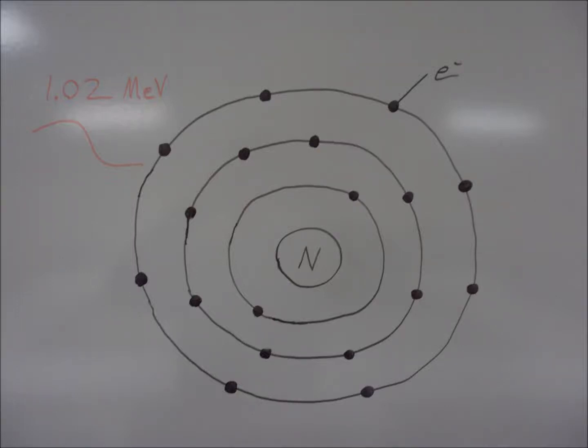Our project is over pair production and annihilation. Pair production is when a high energy photon will come into close proximity with the nucleus of an atom, causing the atom to give birth to two subatomic particles, these particles being a beta positive and a beta negative, leaving us now with annihilation.